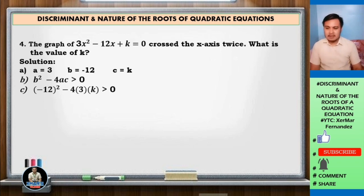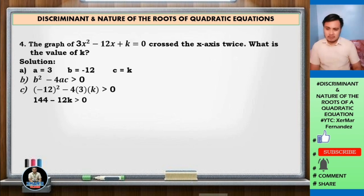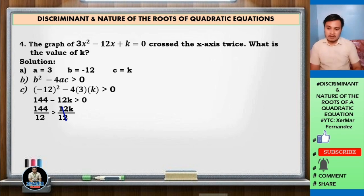Substitute: negative 12 squared minus 4 times 3 times k is greater than 0. Negative 12 squared is 144, and negative 4 times 3 times k is negative 12k, so 144 minus 12k is greater than 0. Transpose negative 12k to the right: 144 is greater than 12k. Divide both sides by 12: 144 over 12 is greater than k. 144 over 12 is 12, so 12 is greater than k, meaning k is less than 12.